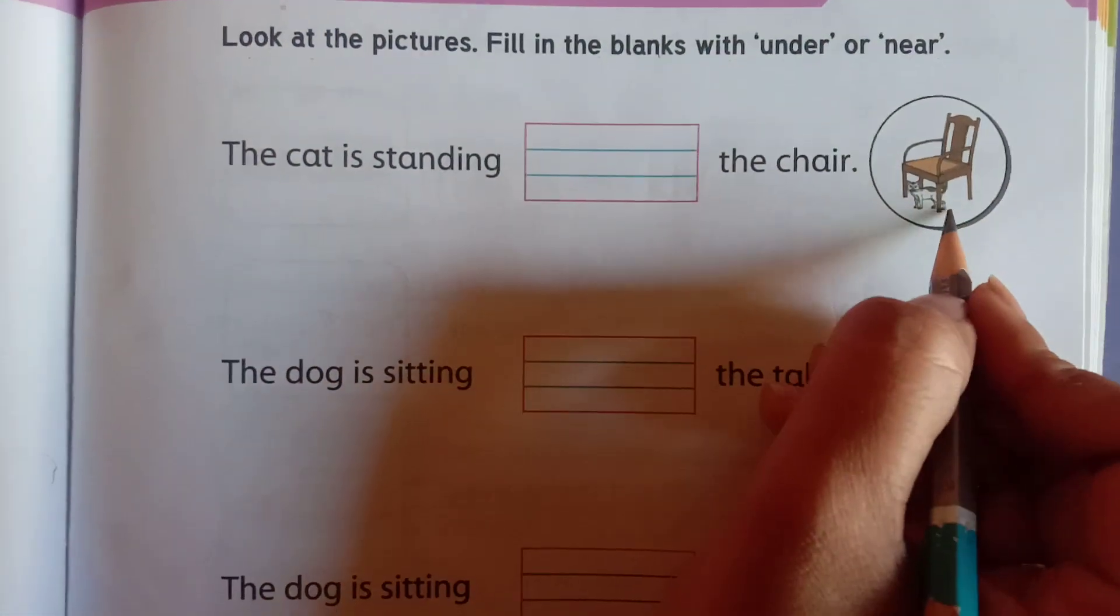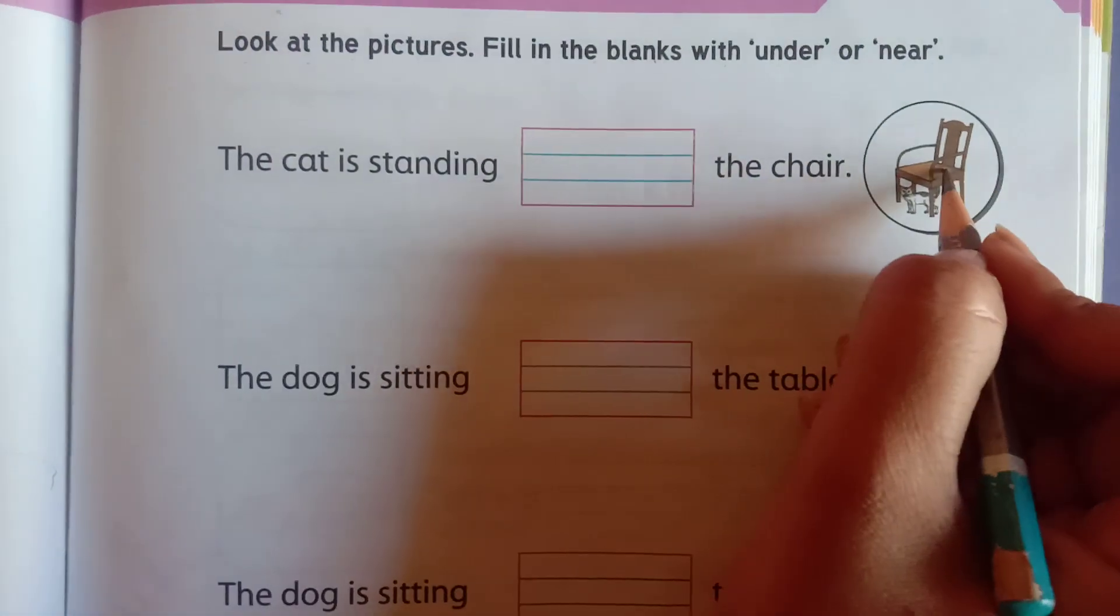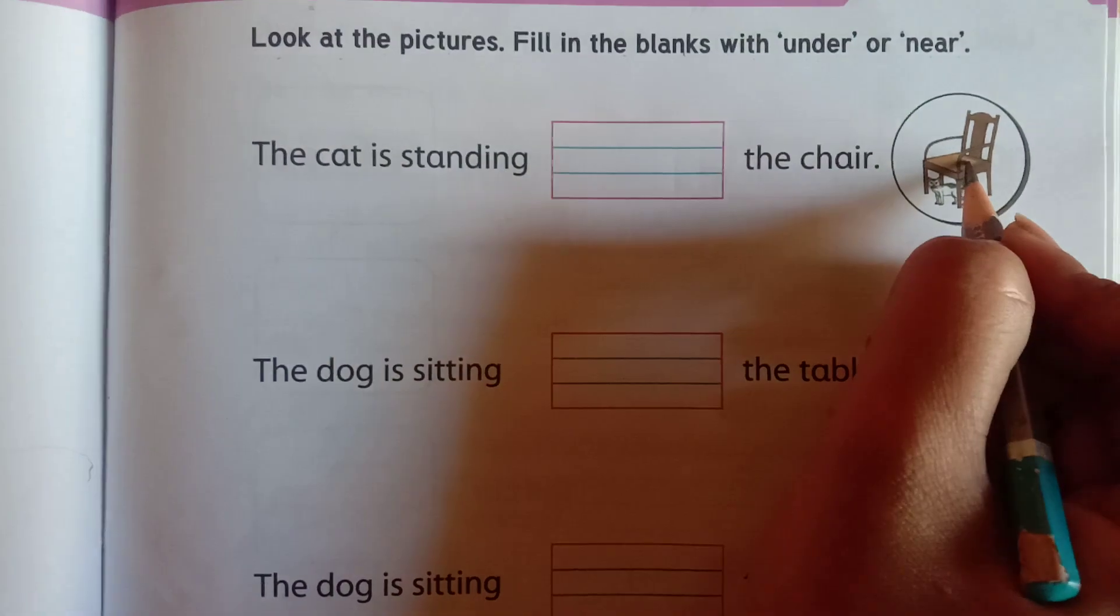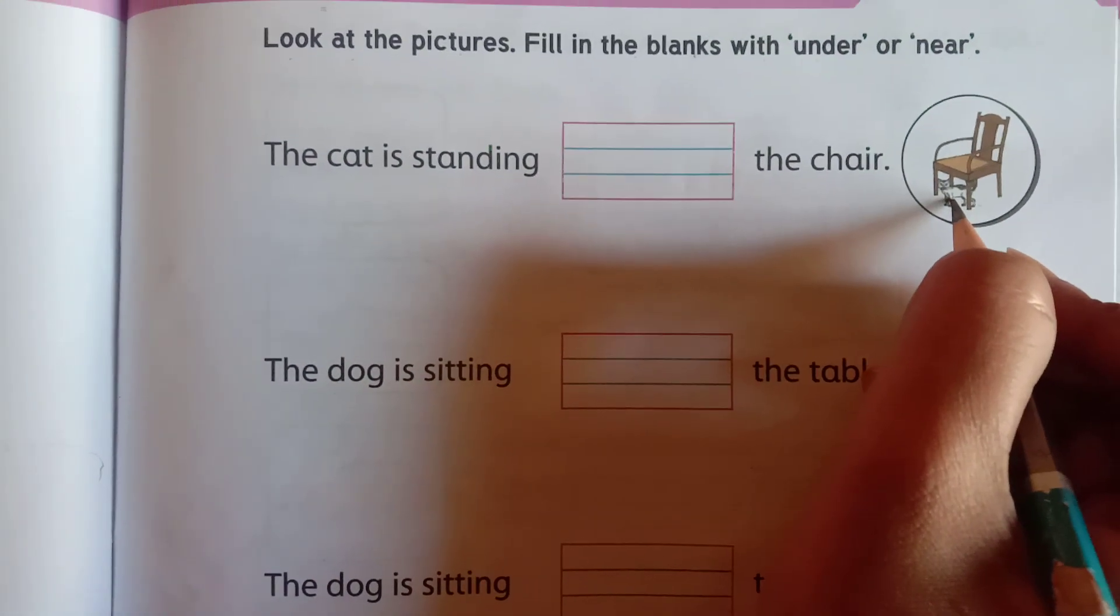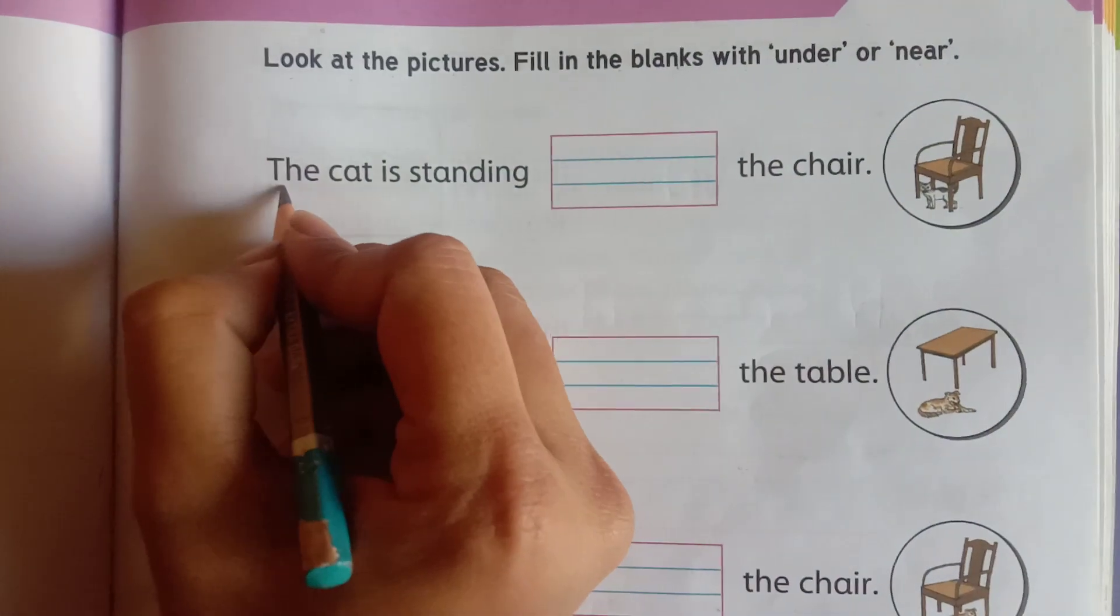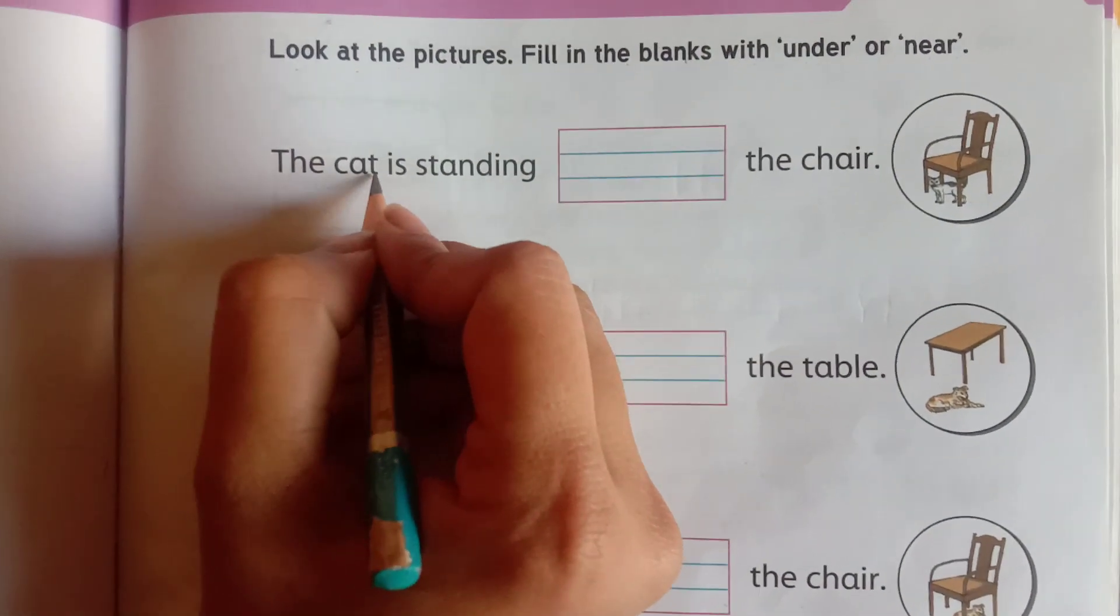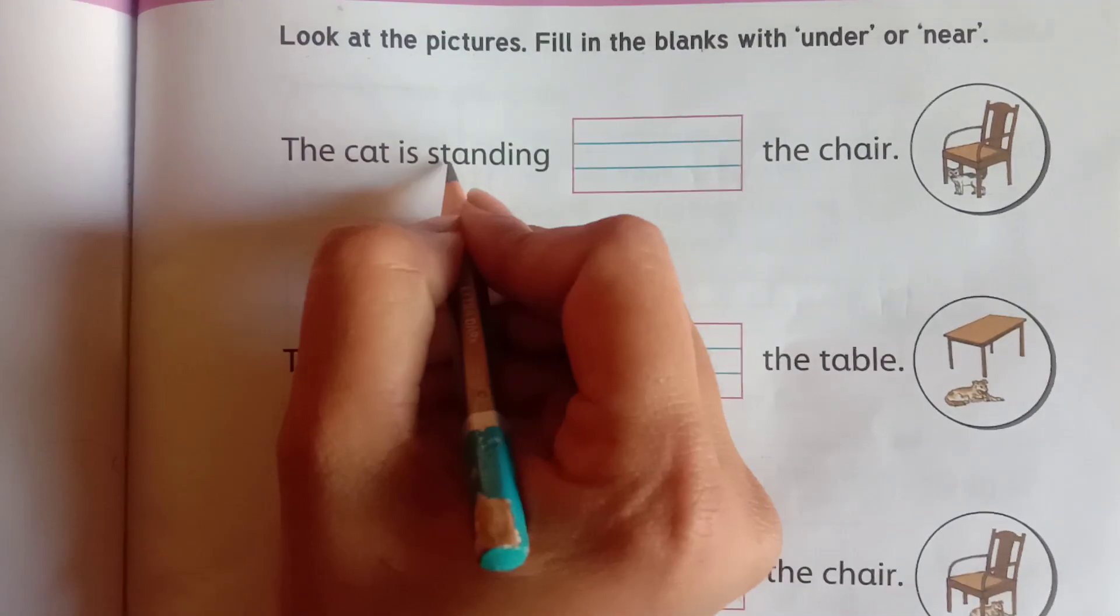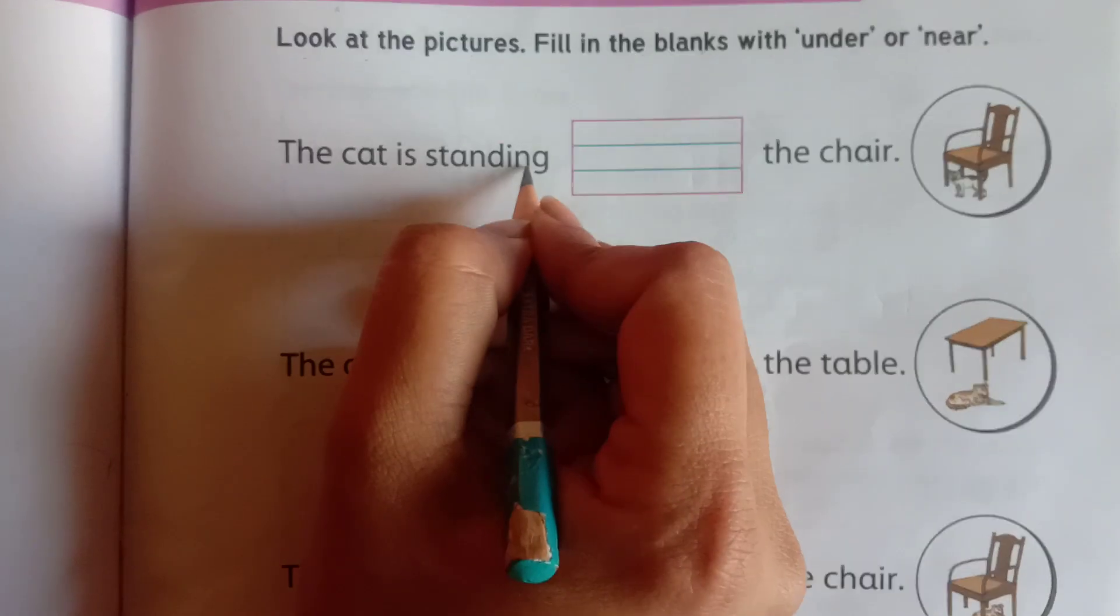So first you have to see the picture. What is this? The chair. And under the chair, who is standing? Cat. So the cat is standing, standing. The cat is standing, what will come?